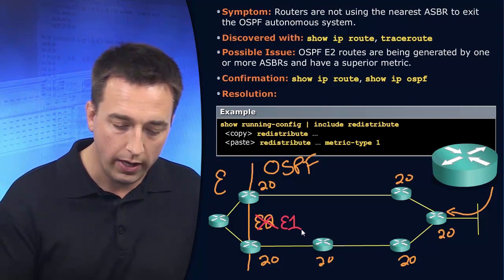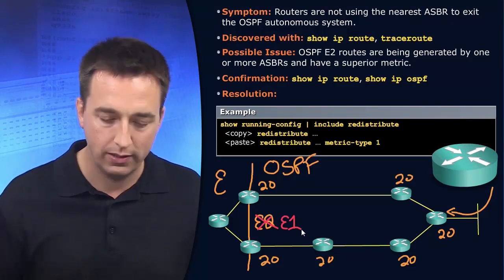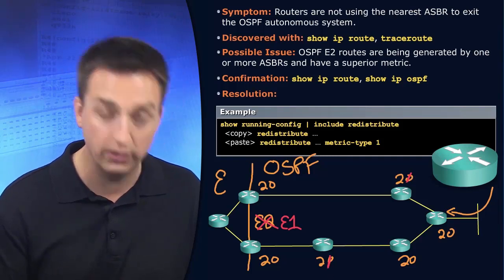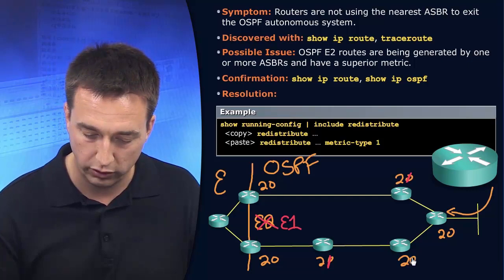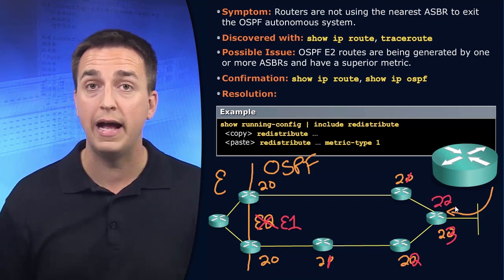The metric is now going to be cumulative for all the different links. So with E1, if the redistributed metric is, or the seed metric is 20, this is now 21 over here. This is 21 over here, because all our links are going to have a cost of one in this example. There's 22. So this is 23 on this path and 22 on this path.